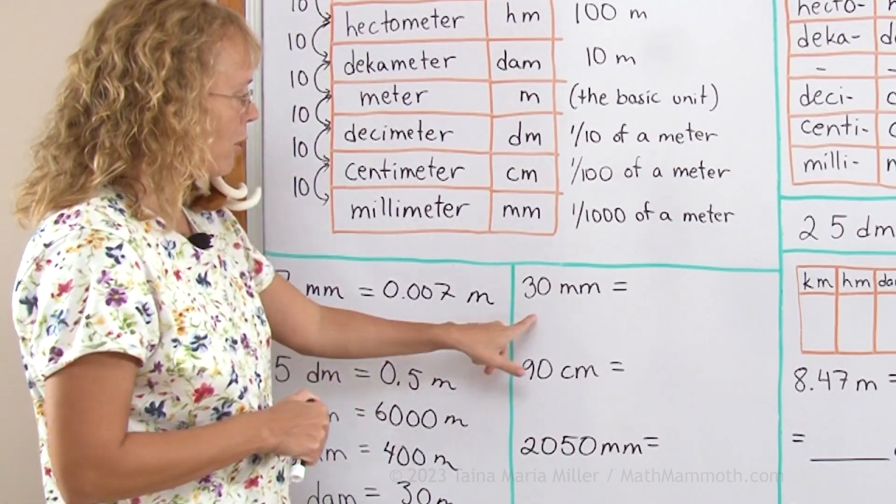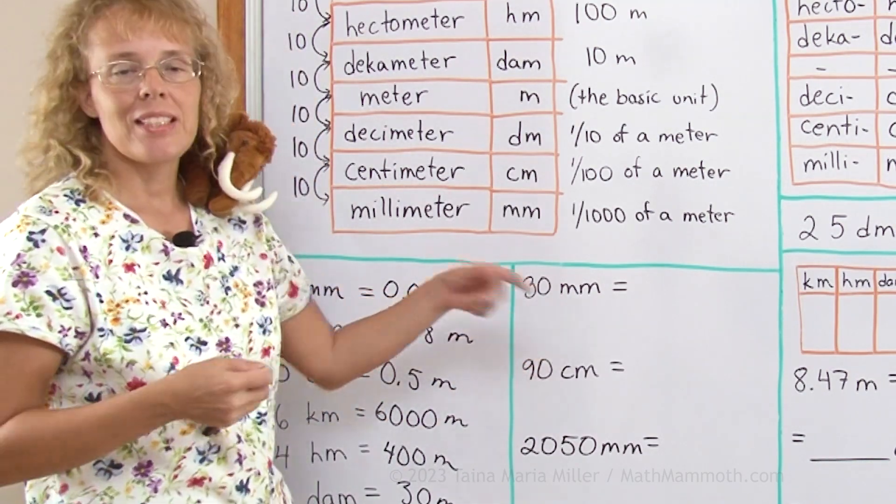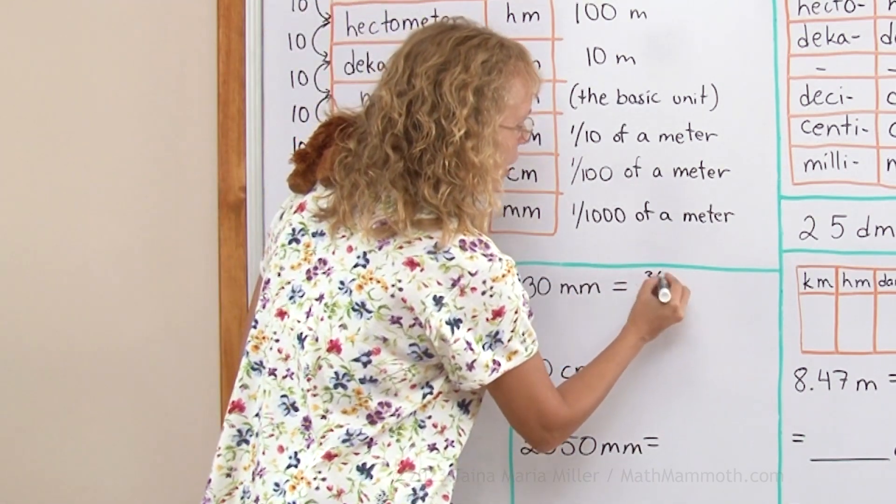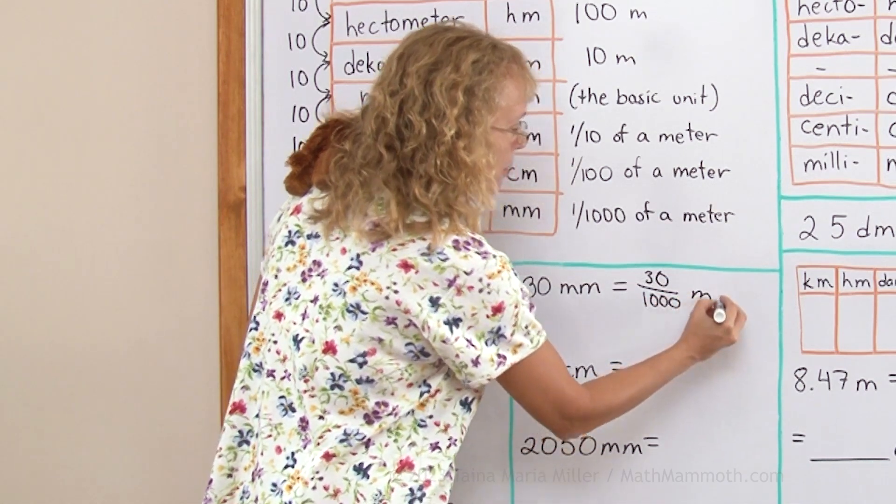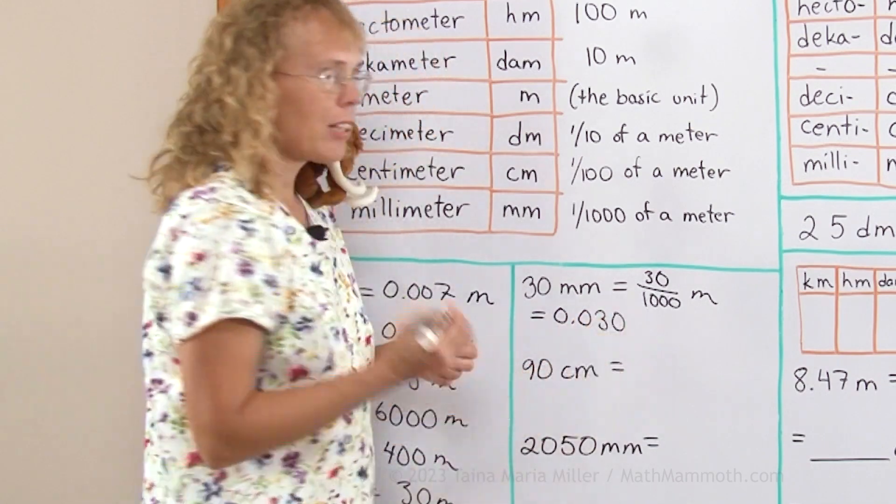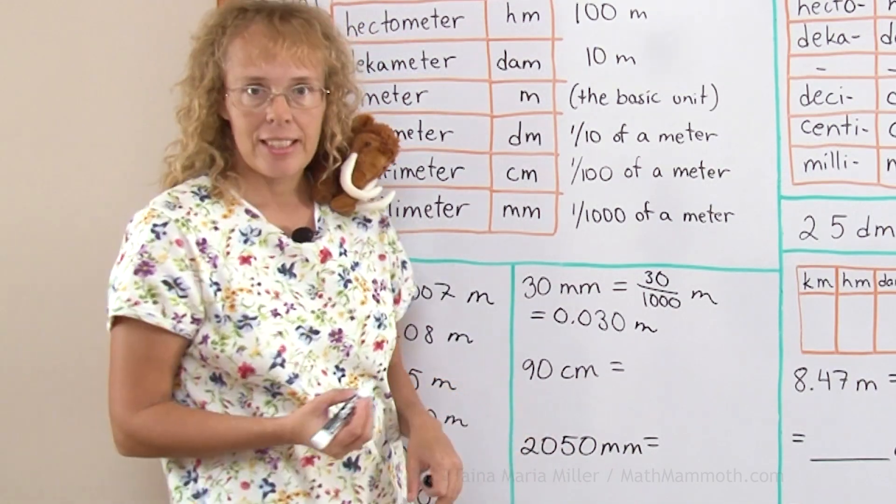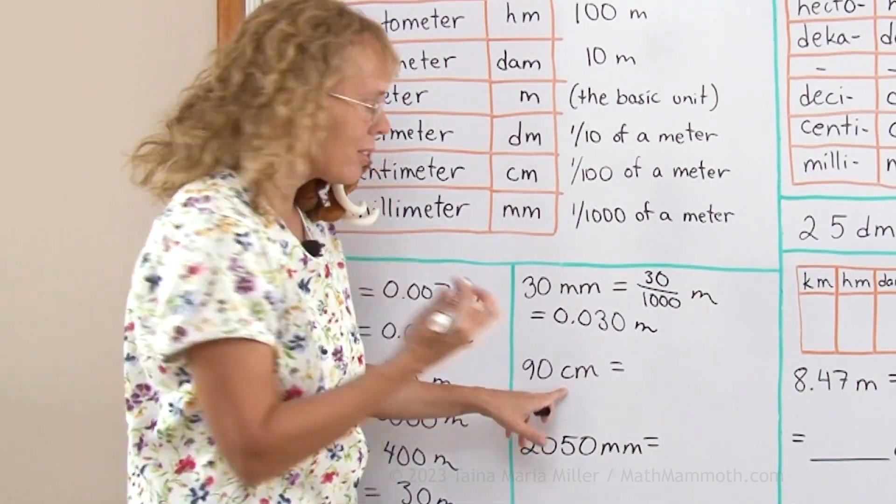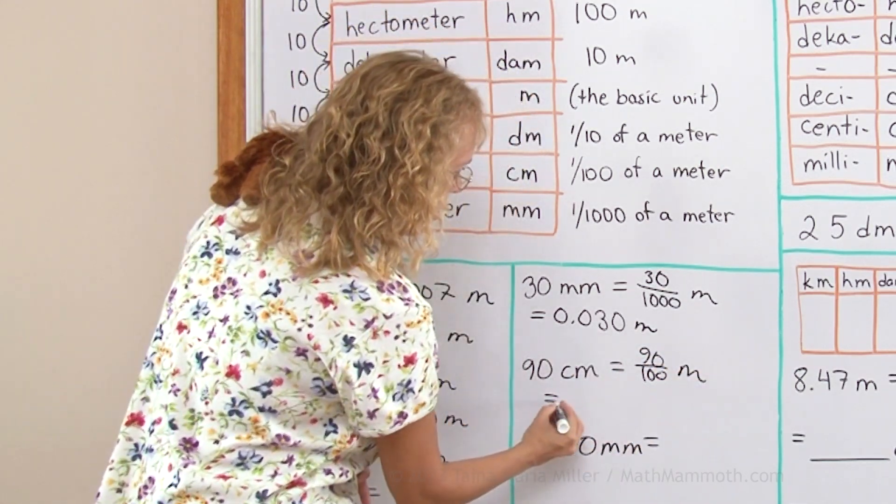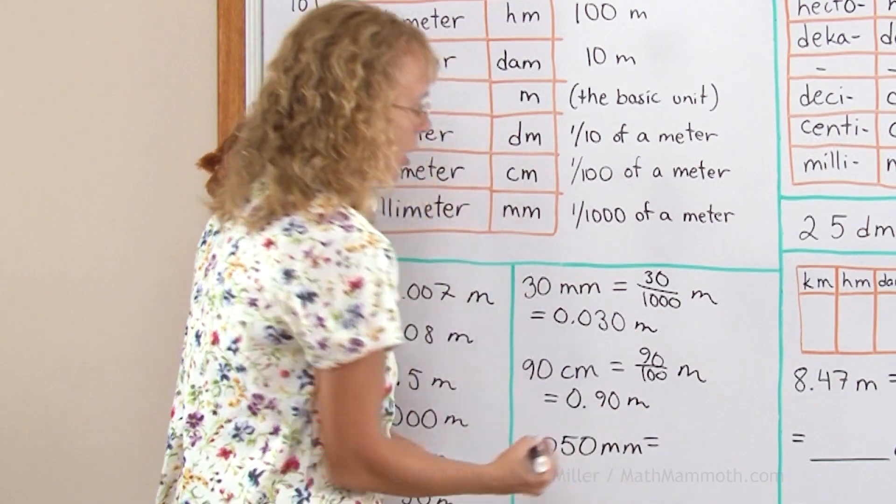Some more examples where we don't have just a single digit number. Thirty millimeters. But again, milli just means a thousandth, so I have here thirty-thousandths, 30/1000 of a meter. As a decimal, this is 0.030 meters. Ninety centimeters. Centi meaning one-hundredth, so this is ninety-hundredths of a meter, 0.90 meters.